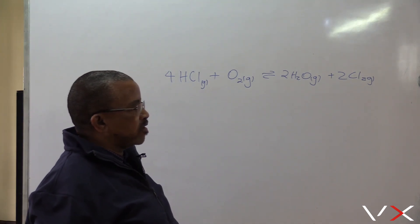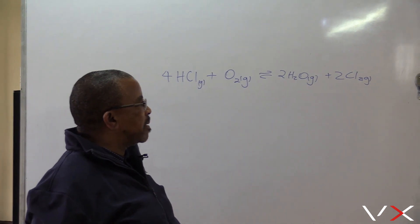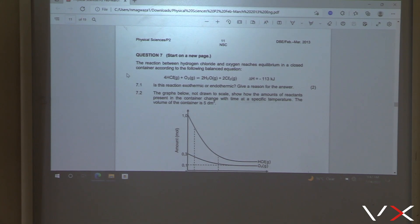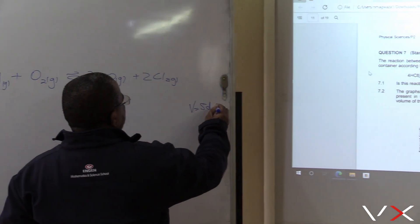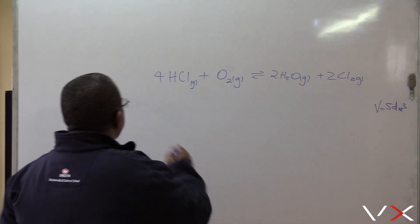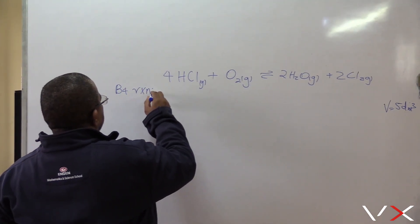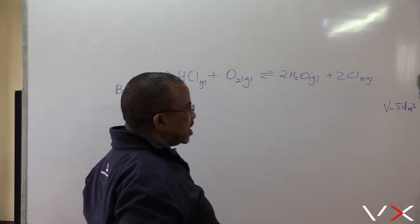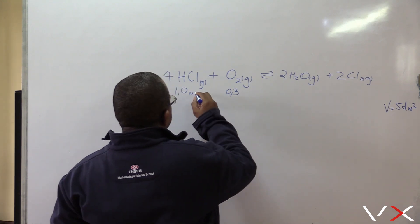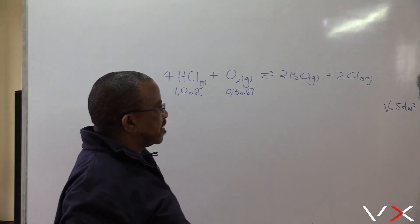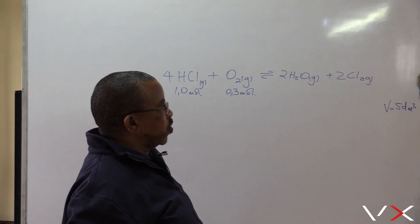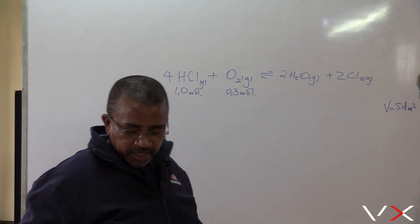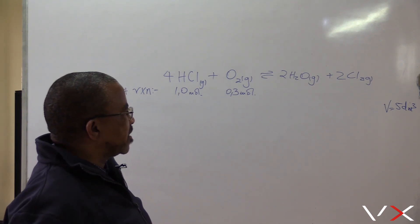Question 7.2: The graph below, not drawn to scale, shows how the amount of reactants present in the container changes with time at a specific temperature. The volume of the container is 5 decimetre cubed and remains constant. The amount of HCl and the amount of oxygen is 0.3 moles.